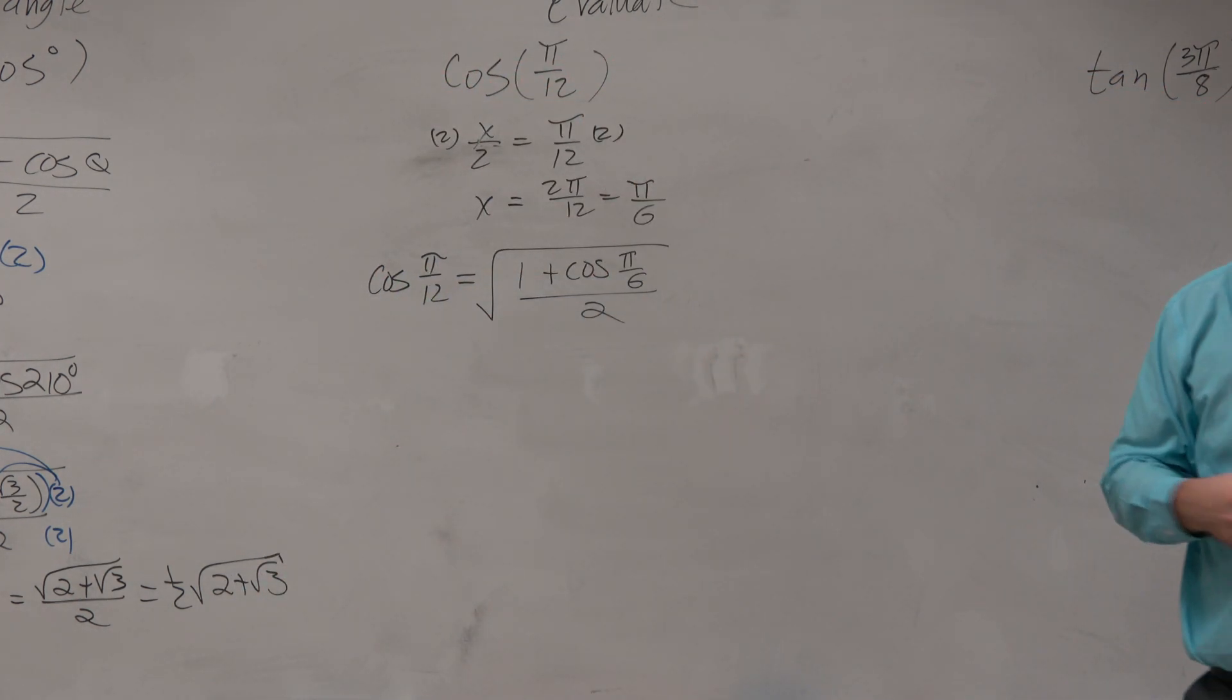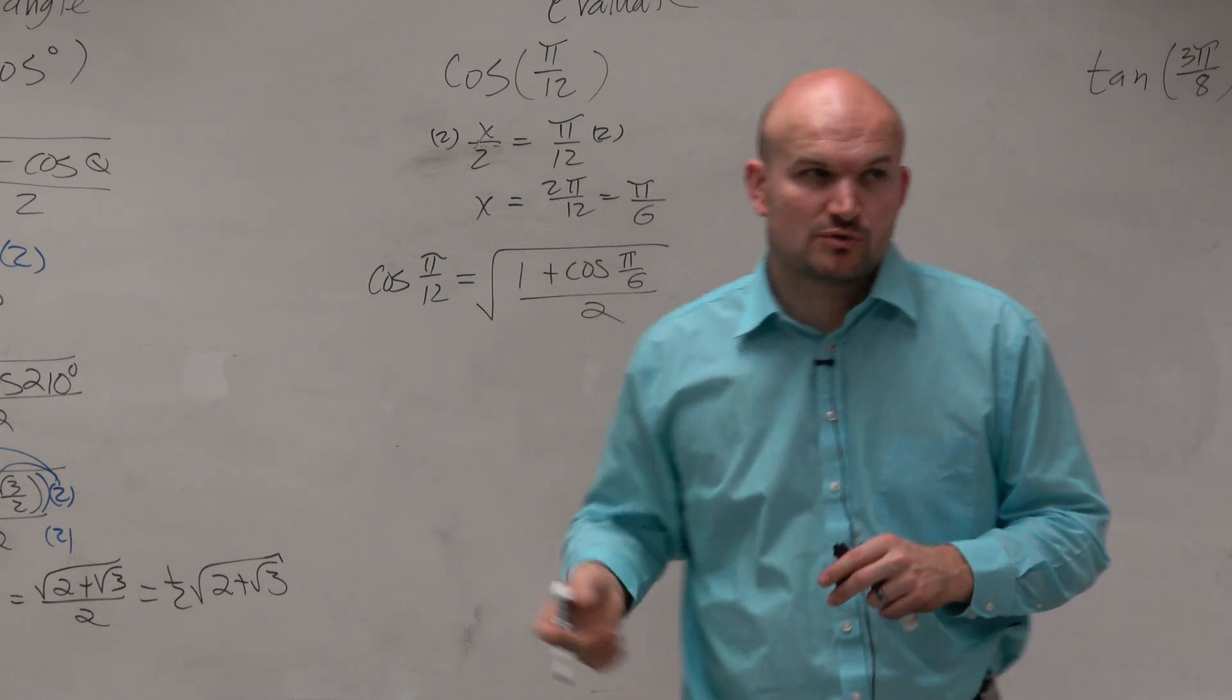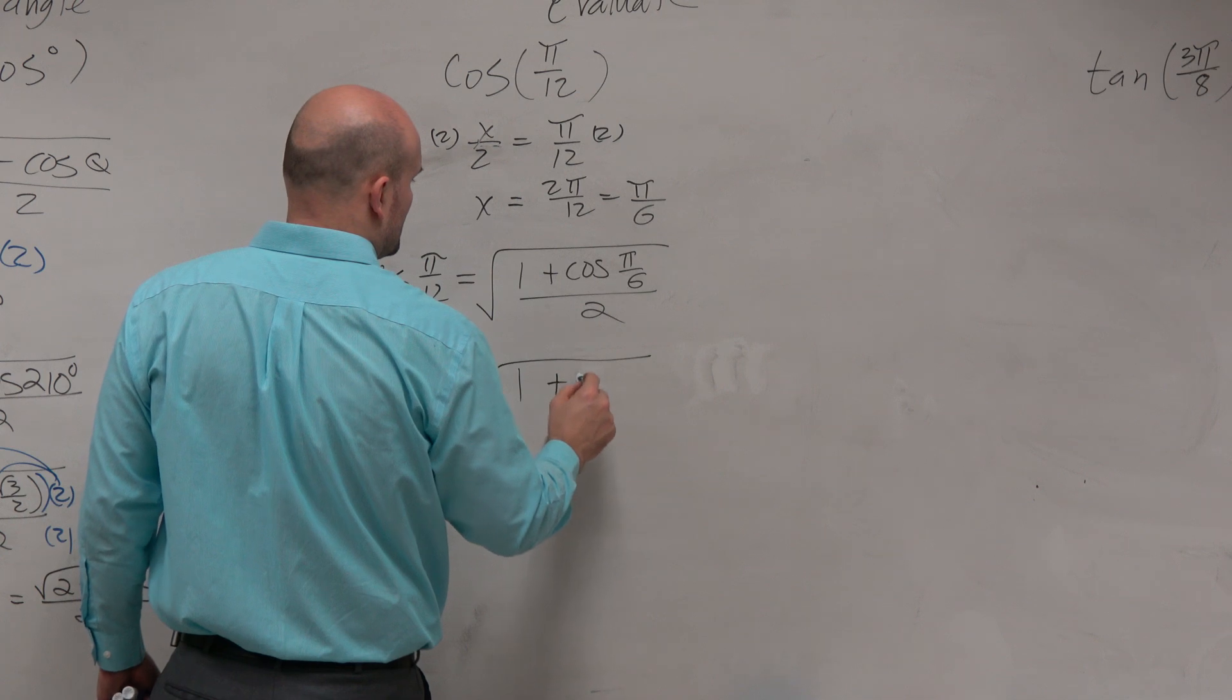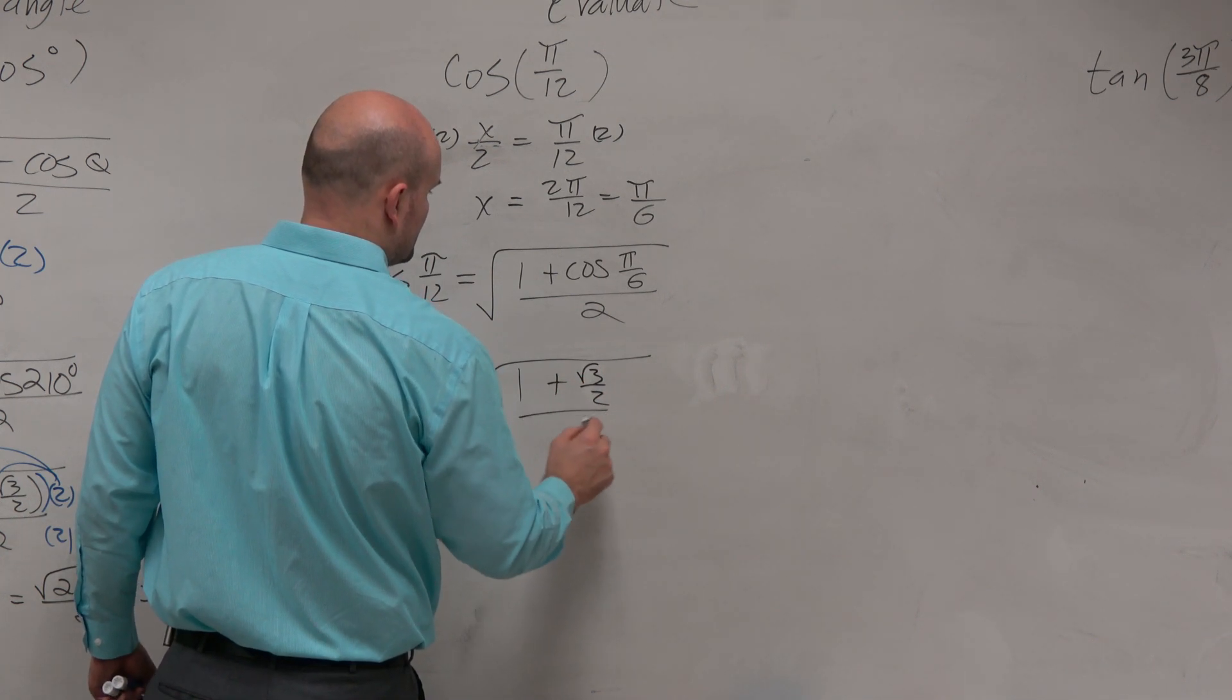The cosine of π over 6 is just the square root of 3 over 2. So it's 1 plus the square root of 3 over 2, divided by 2.